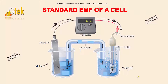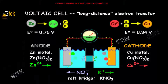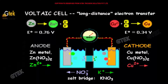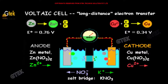Here we go about the discussion of standard EMF of a cell. This EMF is nothing but electromotor force. In the electrochemical cell, I can see the electron transfer from anode to cathode. This one is the anode and this one is indicating the cathode.